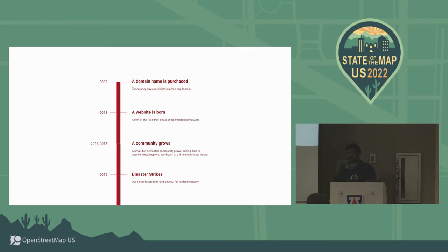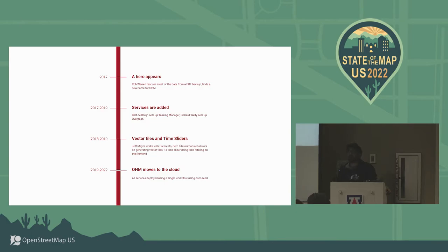In December 2016, just before Christmas, someone said the OHM website looks down, and I went to the server to see what was up — probably just needs to be rebooted. But one of the hard drives had failed. I thought, it's a great setup, we should be able to recover with the other hard drive — but both hard drives had failed. I spent about three days trying to run DD Rescue. Don't ever be in a situation where you need to run DD Rescue. We lost some data. Then Rob Warren appeared — he had a backup of the data, set it up on a better hosting environment at his university, and OHM was restored.